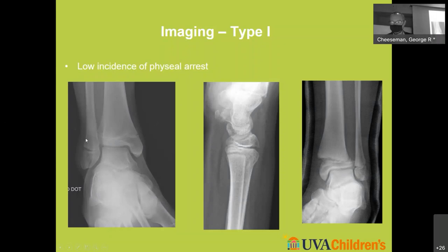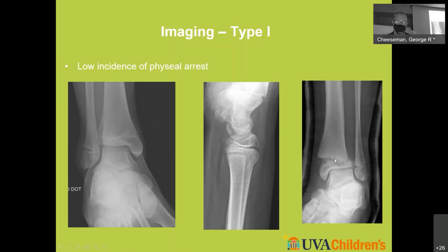Here we see soft tissue swelling and maybe subtle widening of the distal fibular physis laterally — we treat this as an occult Salter-Harris 1 fracture. In another case, there's a small buckle fracture on the dorsal radius, but the dorsal physis of the distal radius is a little wider than the volar surface. And here, with the distal tibia, we don't see a fracture lucency but the epiphysis is displaced relative to the metaphysis — that's a displaced Salter-Harris 1 fracture.